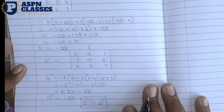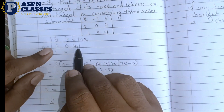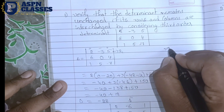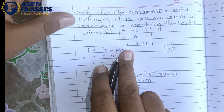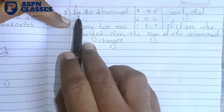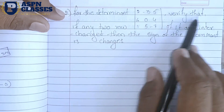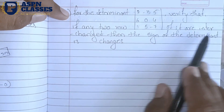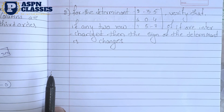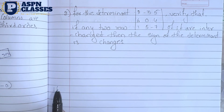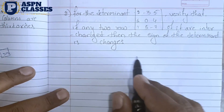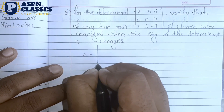We get 3 maths complete. This is important — for the determinant, verify that if any two rows or any two columns are interchanged then the sign of the determinant changes. If you interchange any two rows or any two columns, then the determinant sign will change. The matrix and determinant work the same way.